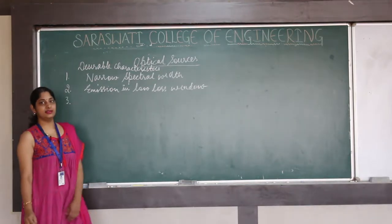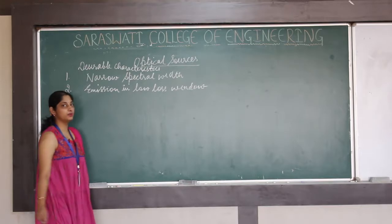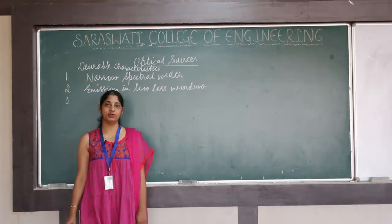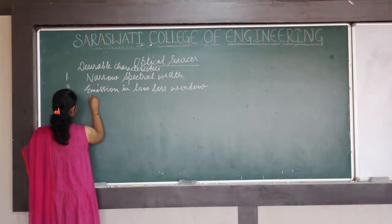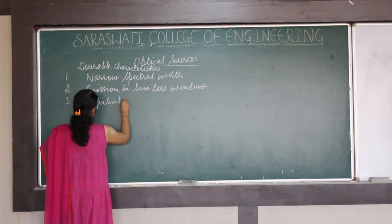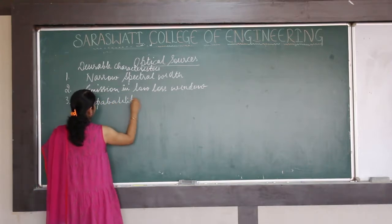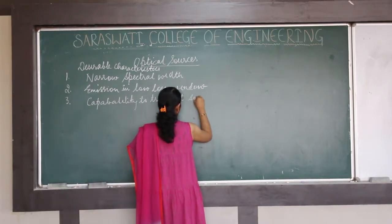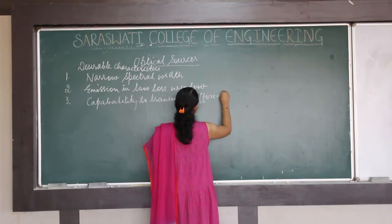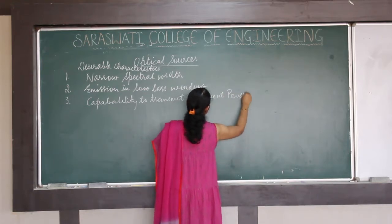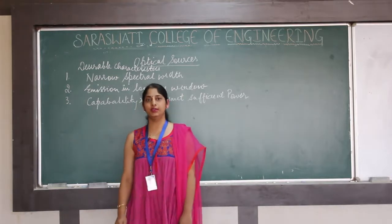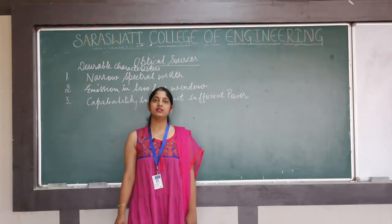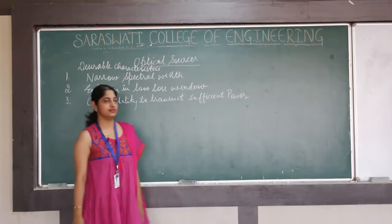The third desirable characteristic is that the optical source should be capable of transmitting an adequate amount of optical energy inside the optical fiber — sufficient power such that even after encountering all types of attenuation and dispersion inside the fiber, the optical signal at the far end is still capable of driving the detector circuit.